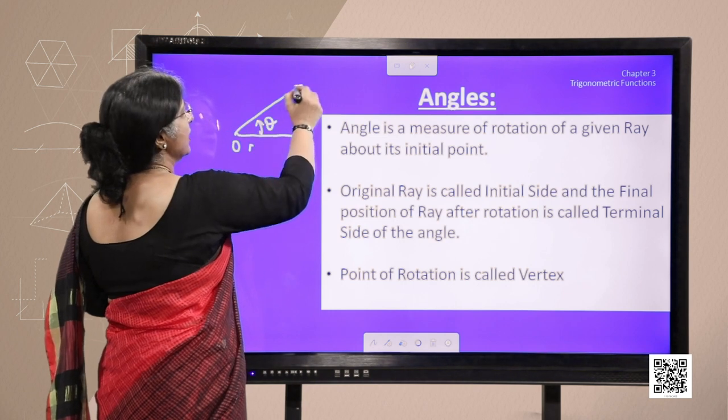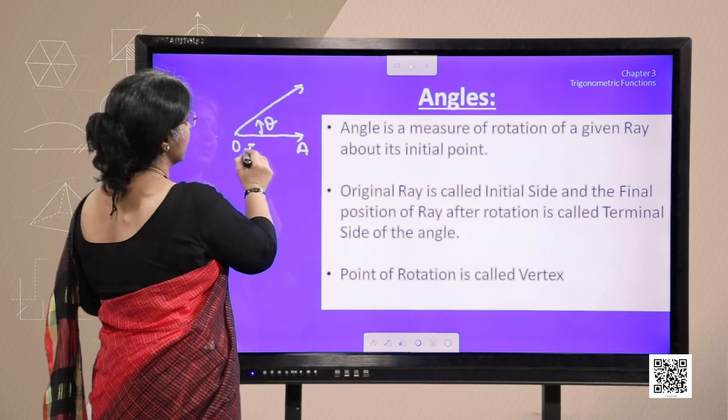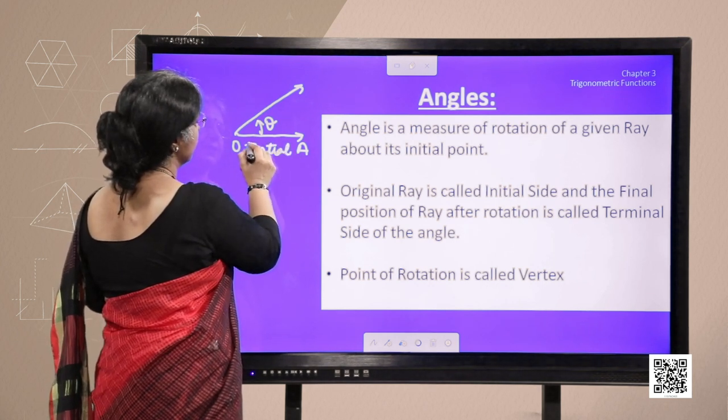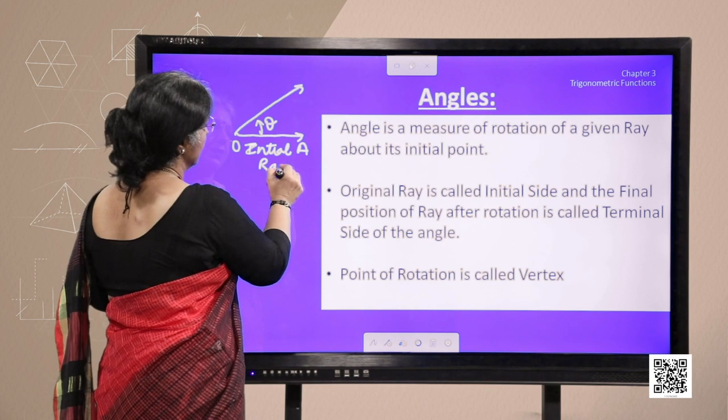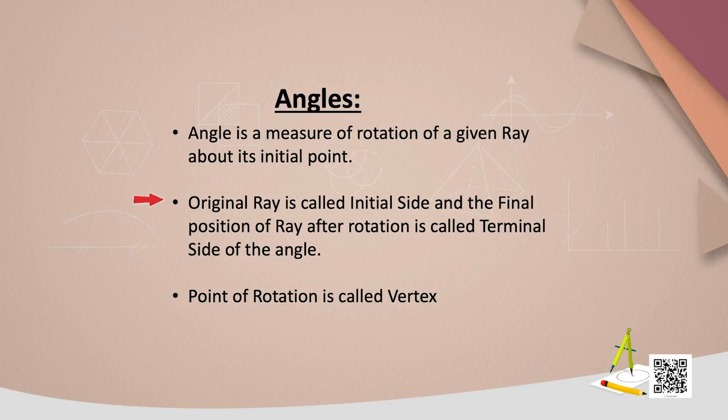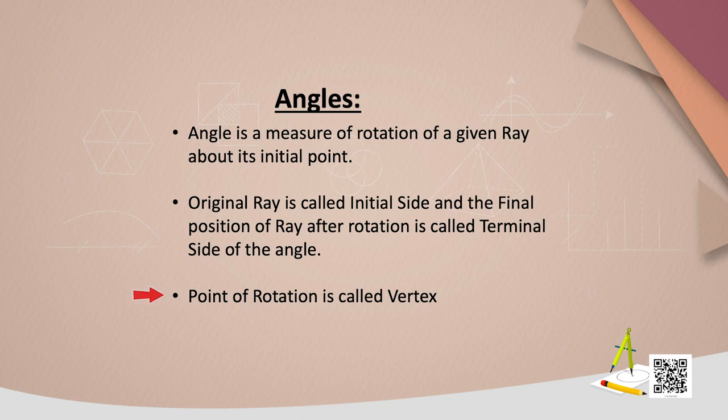This is called terminal ray, which is revolving. Initial ray is stationary. It keeps on revolving. Point of rotation is called vertex. Here it is O.